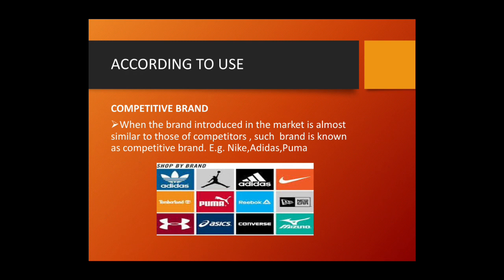The last one is the Competitive Brand. When the brand introduced in the market is almost similar to those of competitors, such a brand is known as a competitive brand. For example, sportswear brands like Nike, Adidas, and Puma show very few differences among them, yet offer products similar in performance and appearance. People still love their respective brands and performance. With this, we complete the types of brands. See you in the next session on Branding Strategies.